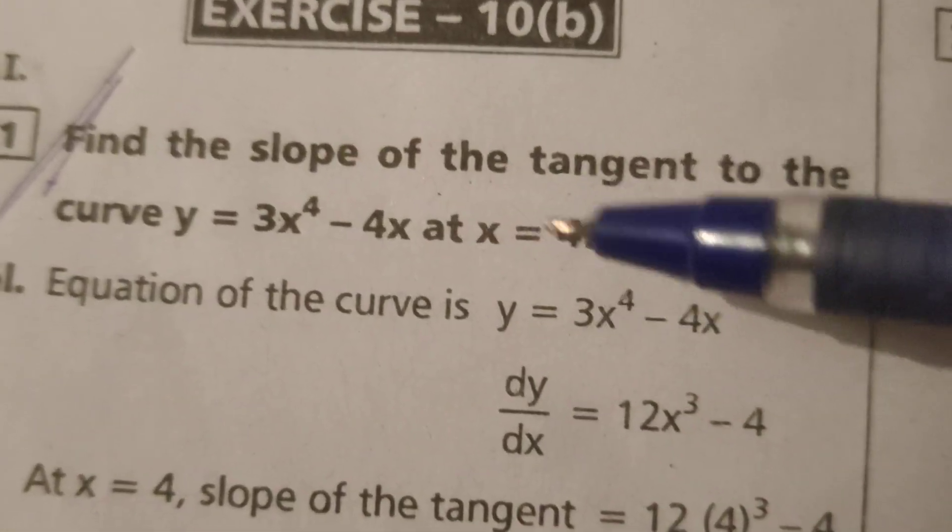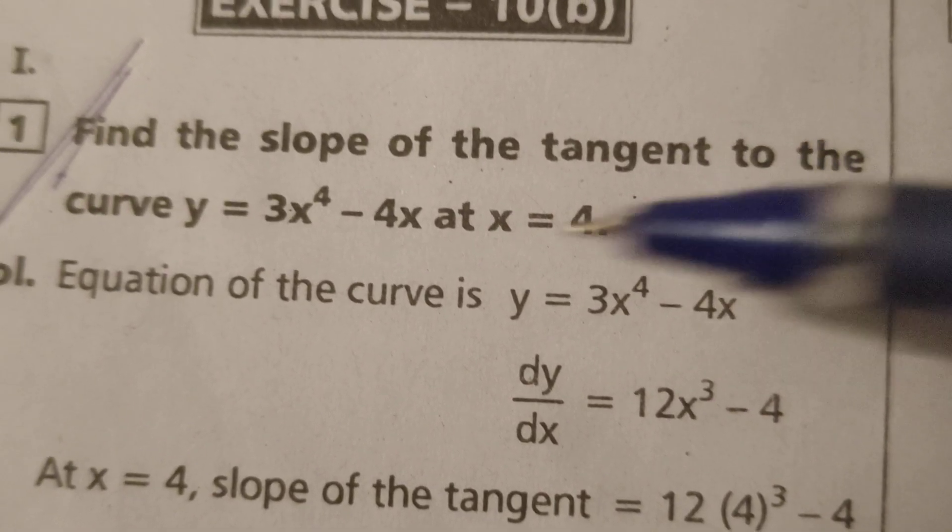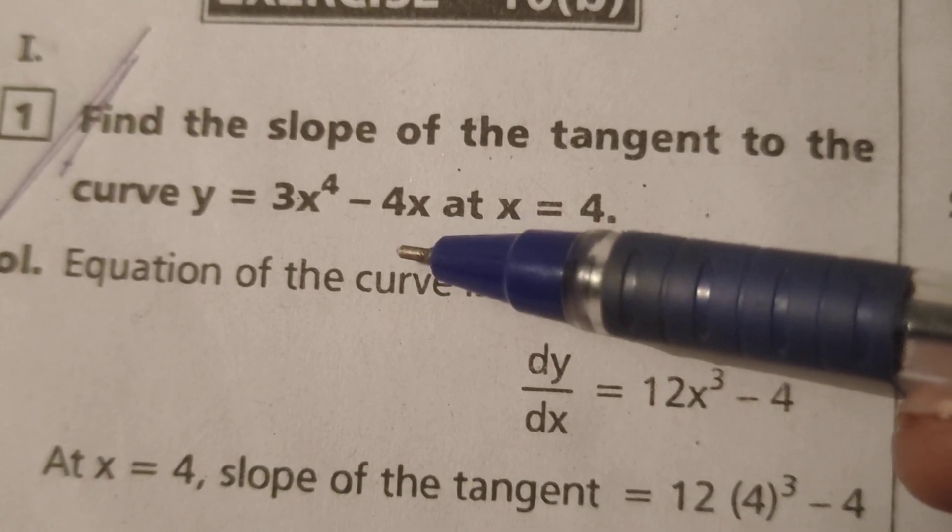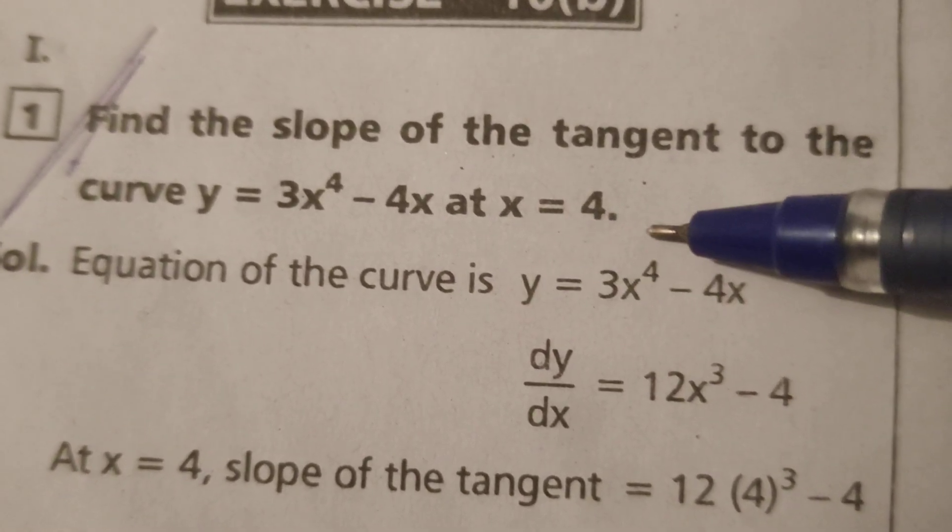Dr. Nithi. Now today we are going to explain this problem: find the slope of the tangent to the curve y equals 3x to the power 4 minus 4x at x equals 4.